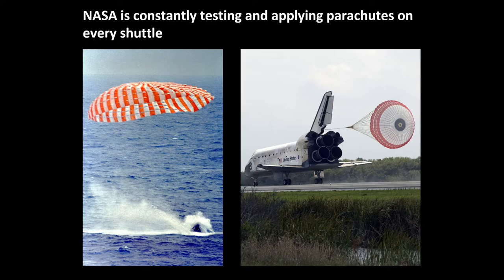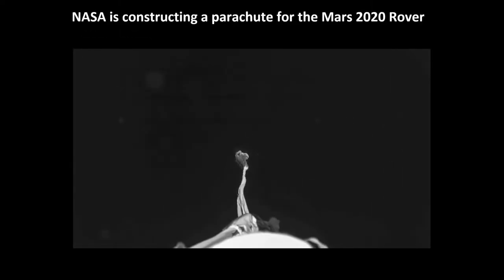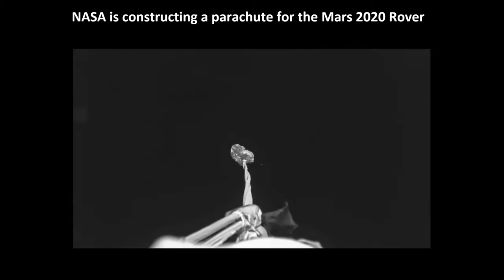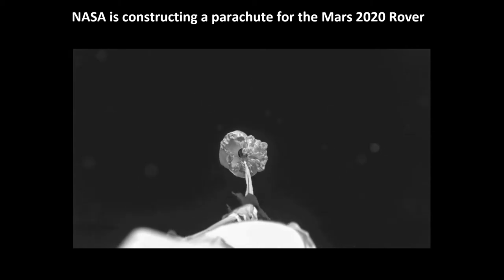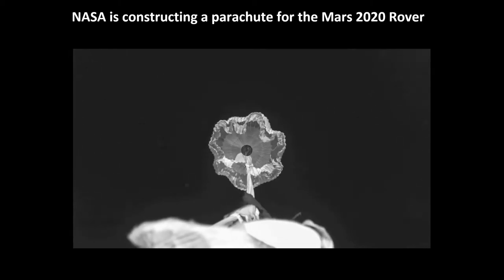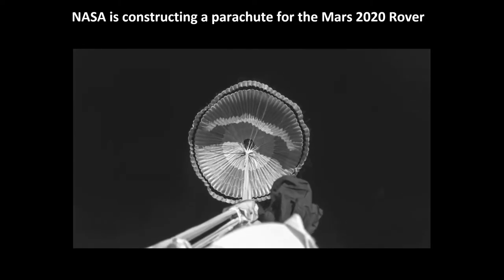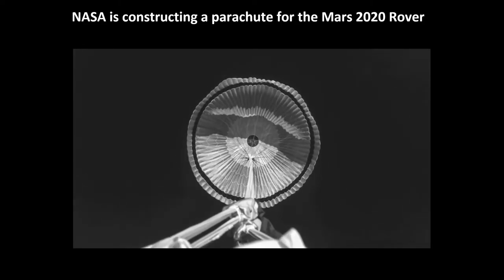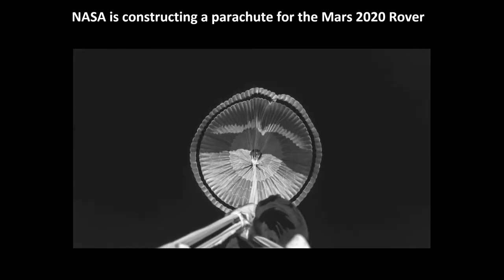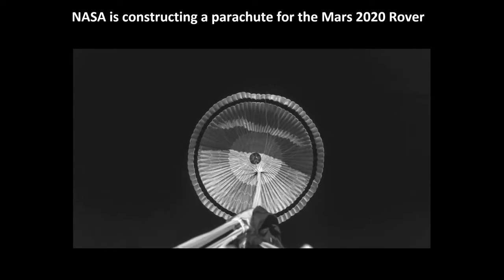Luckily, everything went smoothly. At over 10,000 feet in the air, the velocity of the spacecraft, which weighed 32,500 pounds, went from 175 miles per hour to 22 miles per hour, allowing it to land safely in the water. NASA is currently constructing a parachute to land a rover on Mars in 2020. Even though they are testing the chute in a very different atmosphere, the shape of the parachute is still really similar to what we use on Earth. The functions are also the same — decreasing the rover's terminal velocity and allowing it to gently land on Mars with minimal damage, which is really important because getting a rover into space is already extremely difficult.